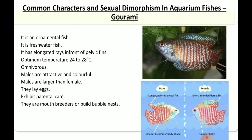Gourami is an ornamental freshwater fish. It has elongated rays in the pelvic region. The optimum temperature for reproduction is around 24 to 28 degrees. They are omnivorous. Males are attractive and colorful, whereas females are dim in color, and males are larger than females. They lay eggs, exhibit parental care, are mouth breeders, and build bubble nests.